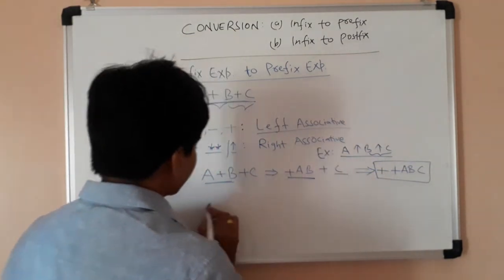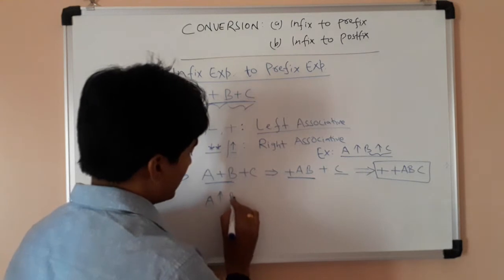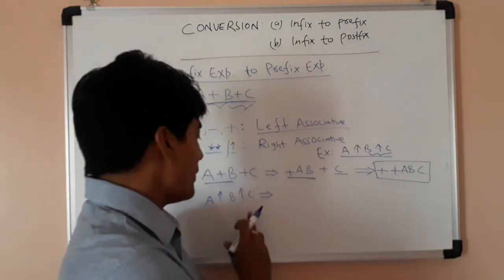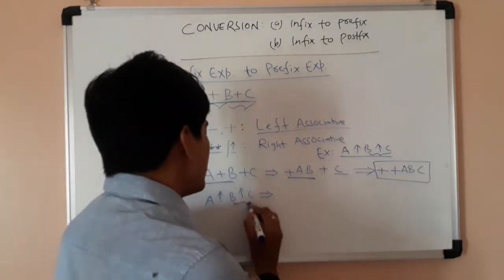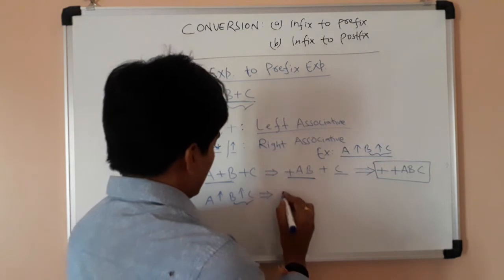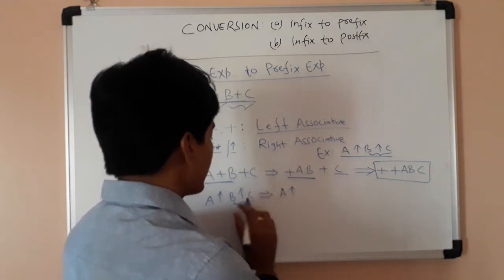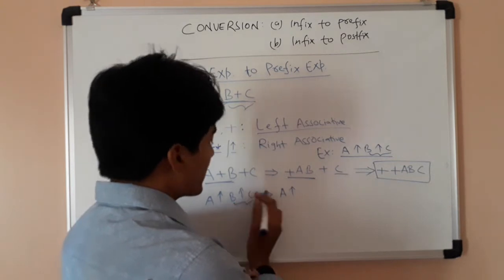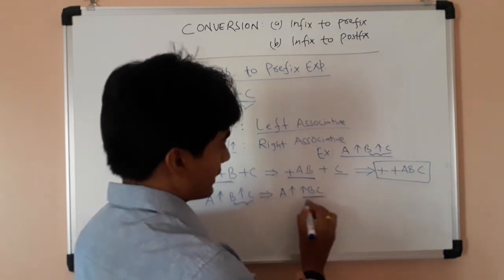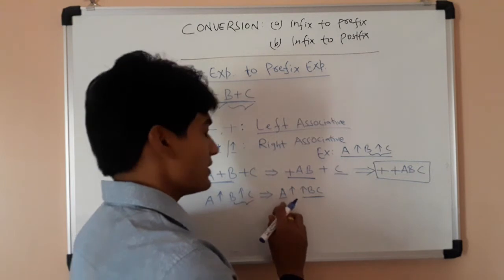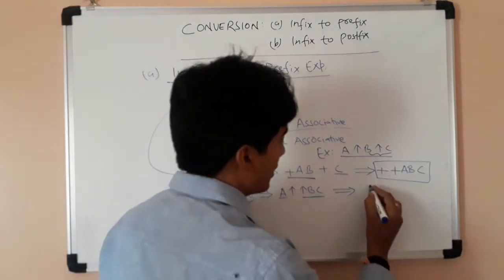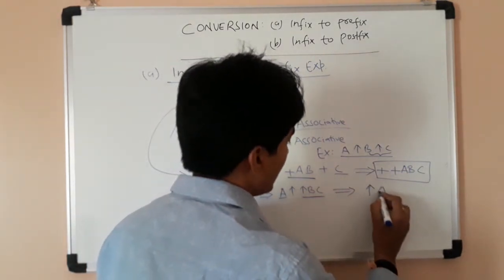Now suppose we have a power b power c. Since power is right associative, b power c will be evaluated first, then a power whatever result we have. So the inner operator appears before b and c, giving power b c as a single unit. This becomes the second operand, and a is the first operand. The outer operator appears before both operands, giving us power a power b c as the prefix expression.